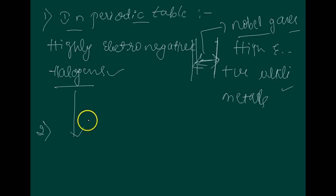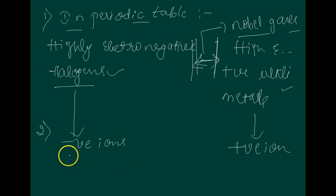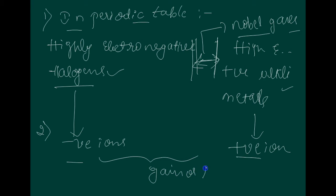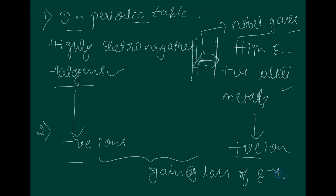From halogens, negative ions form, and from alkali metals, positive ions form. These ions are formed by the gain or loss of an electron by the respective atom. So the gain or loss of electrons is the second key fact.